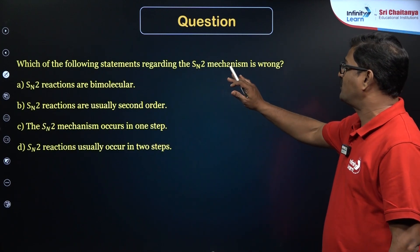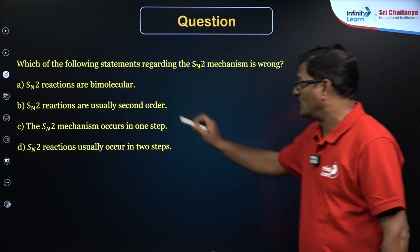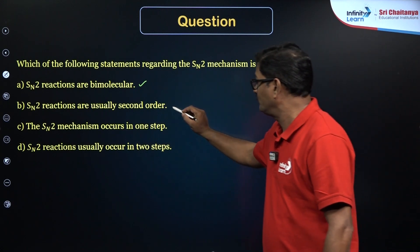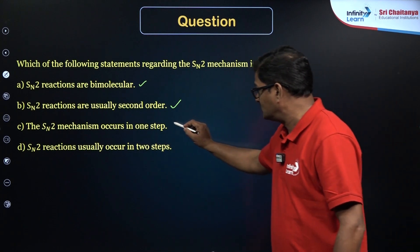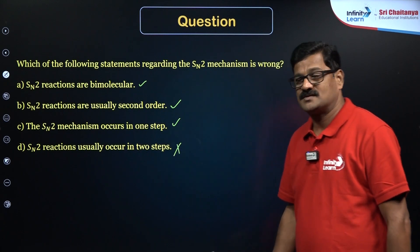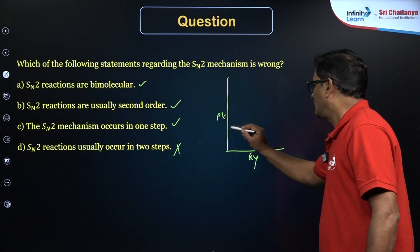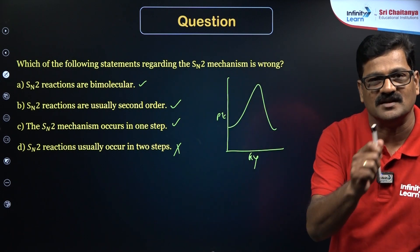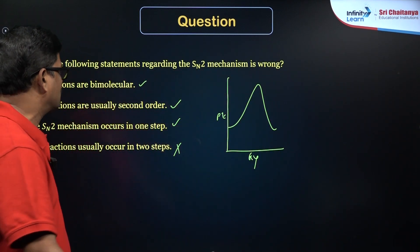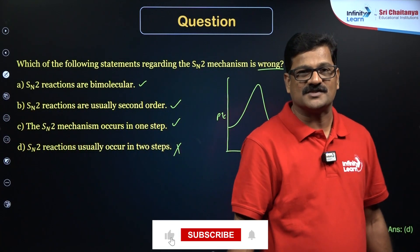Practice Question 3: Which statement regarding SN2 mechanism is wrong? SN2 reactions are bimolecular — correct. SN2 reactions are usually second order — correct. SN2 mechanism occurs in one step — correct. SN2 reactions usually occur in two steps — this is wrong, because the energy diagram shows a single peak confirming a single step. Therefore option D is the wrong statement.